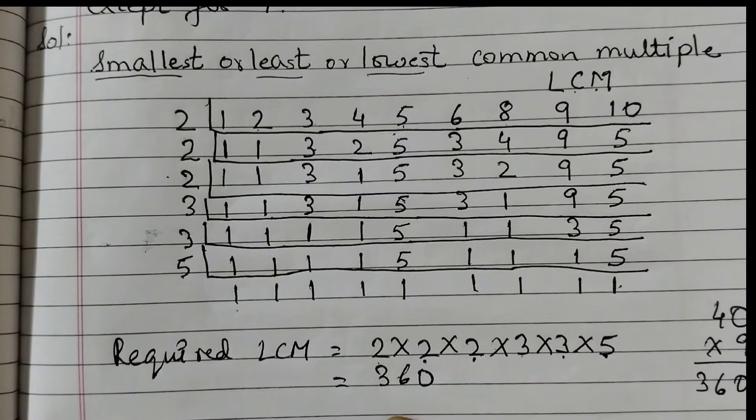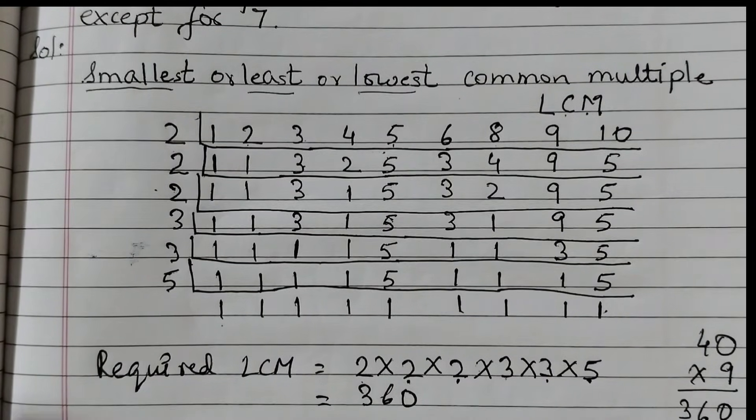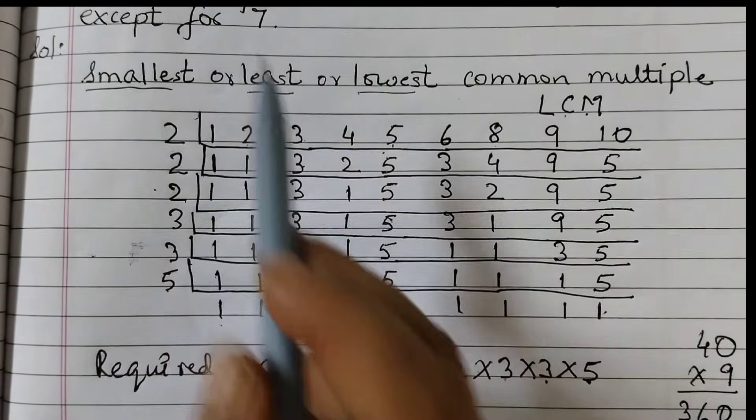Same way you need to do question number 10, which is find the smallest number that is a multiple of all the numbers from 1 to 10. Here 7 is excluded, there 7 is also included.